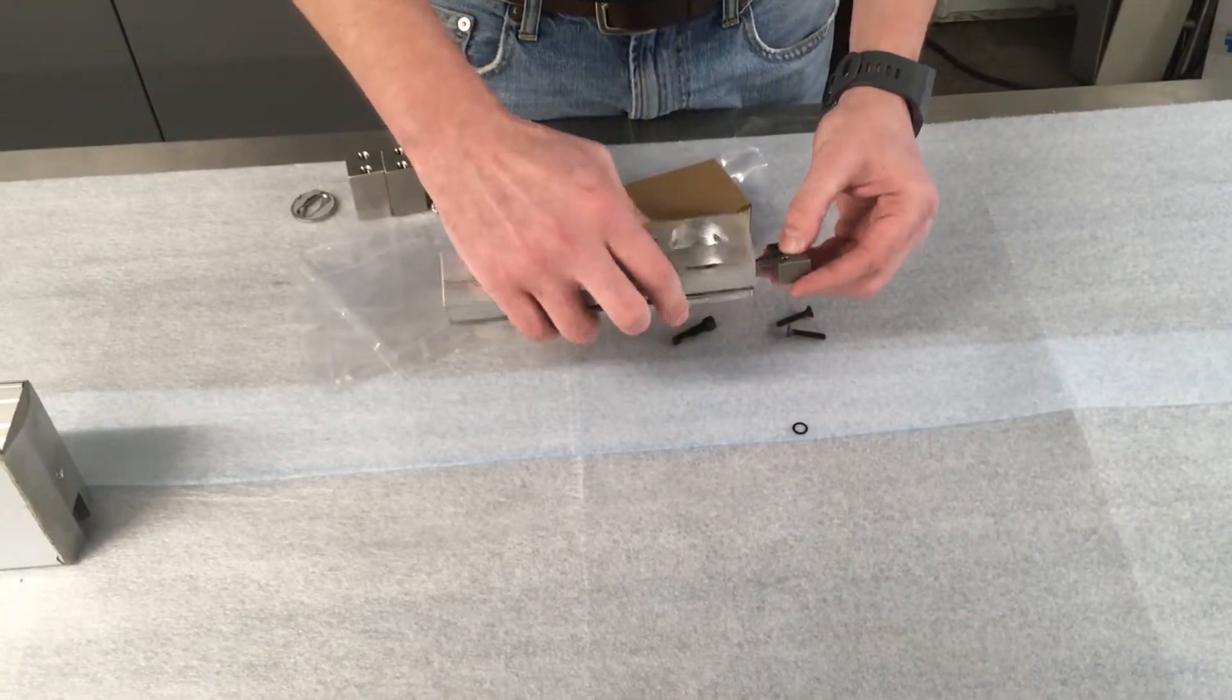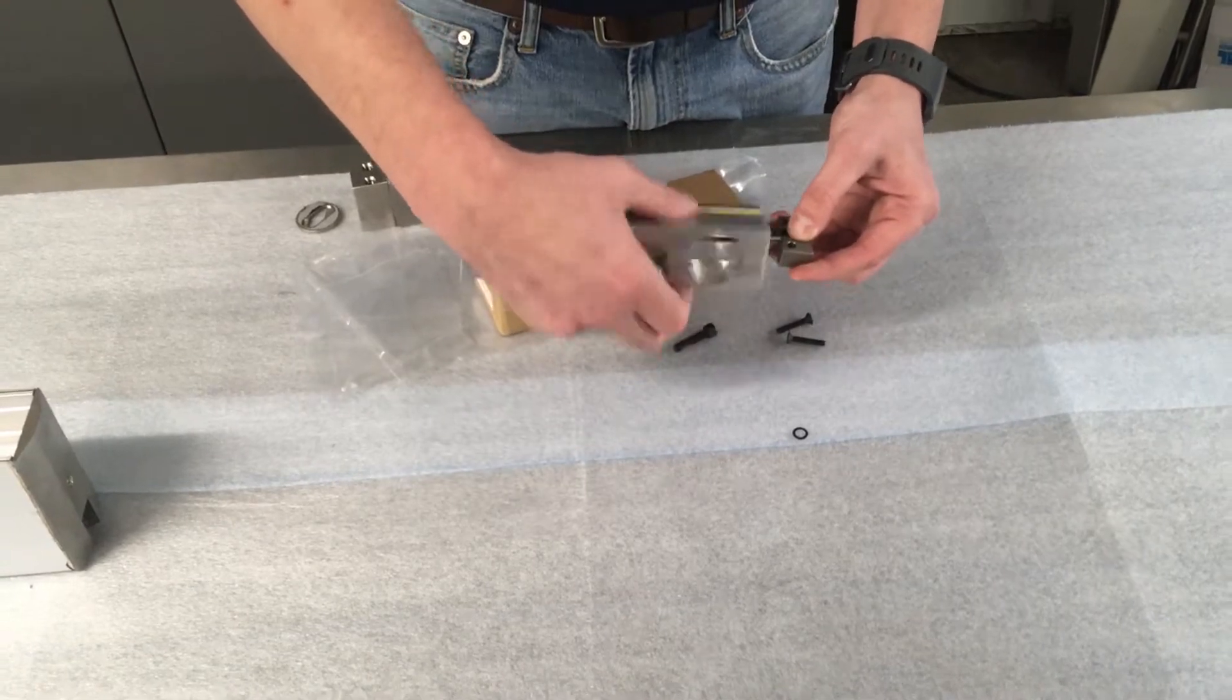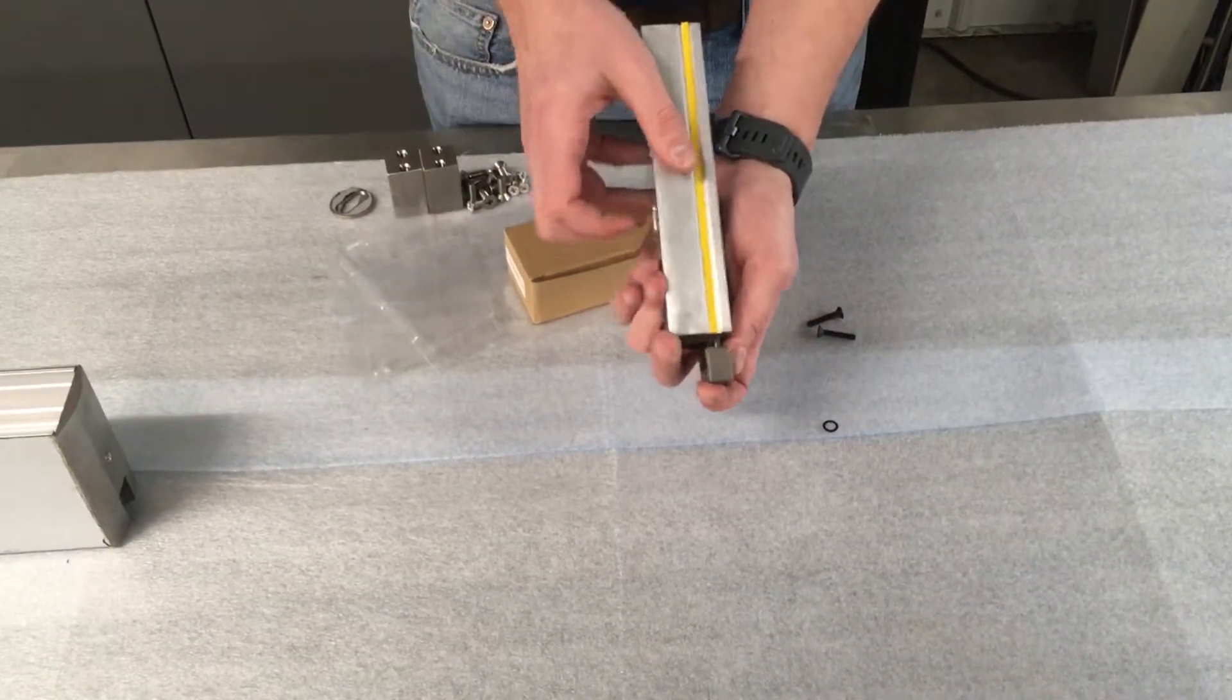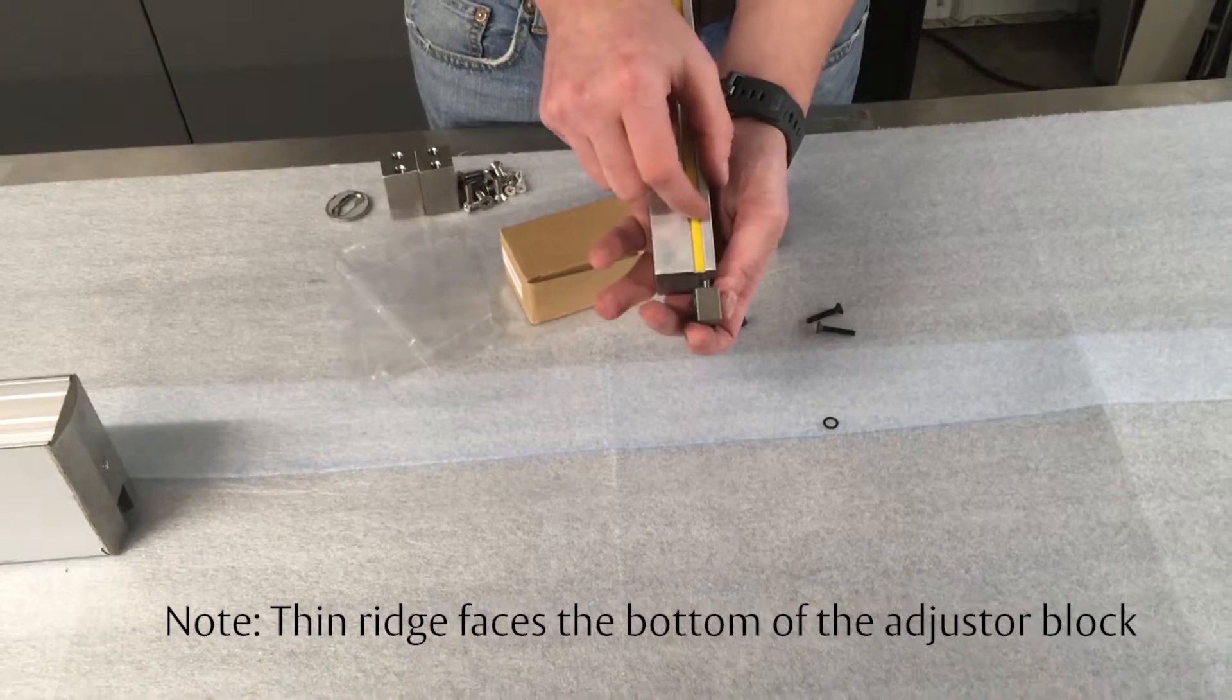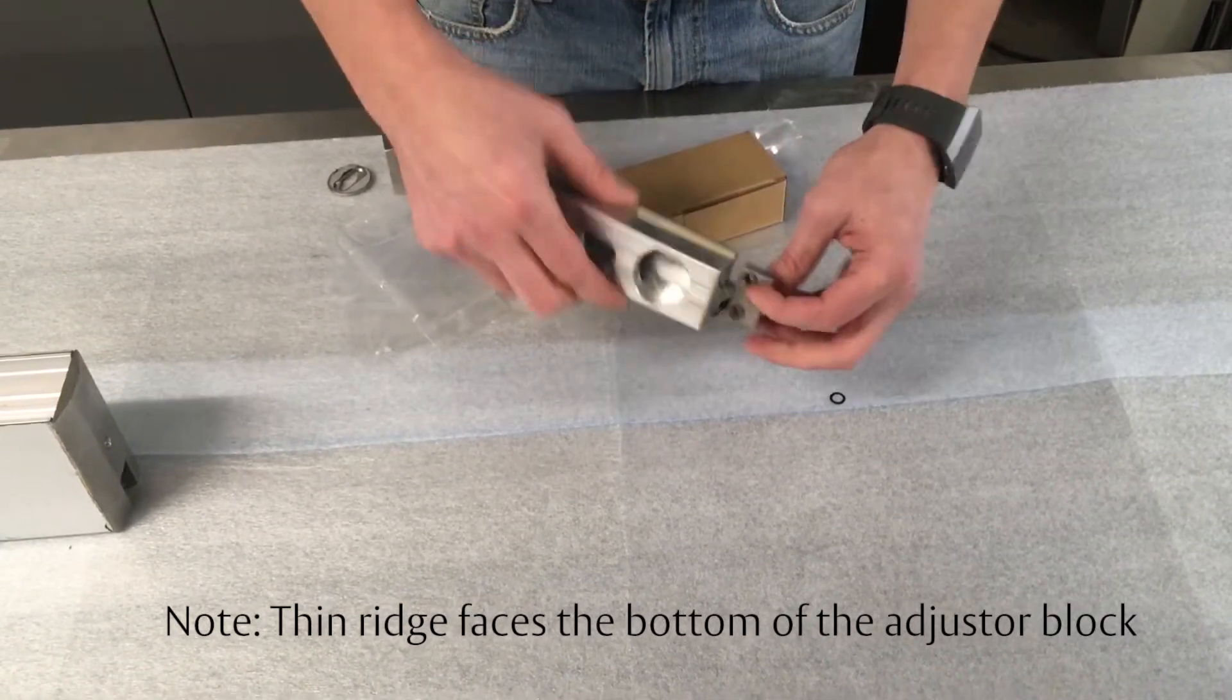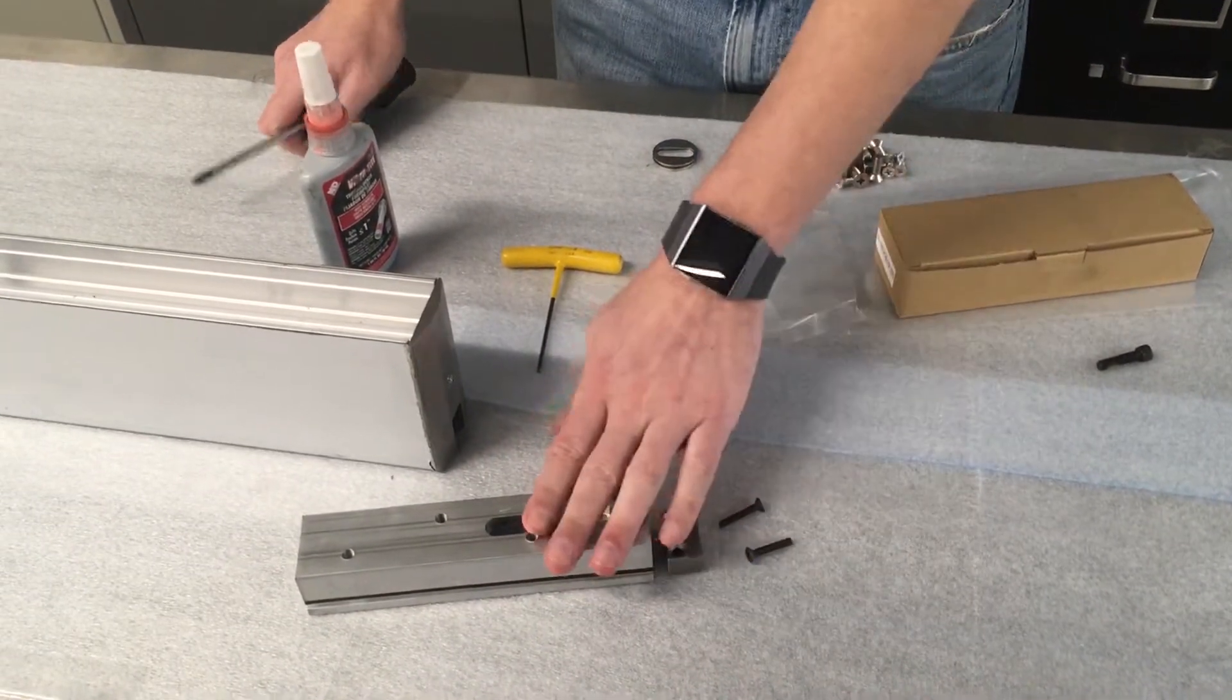The next step is to install the adjuster screw to your PVPL. Now as you can see, this PVPL is taller on one side. You have a wide ridge and then a thin ridge. You want this thin ridge facing the bottom of your adjuster block.